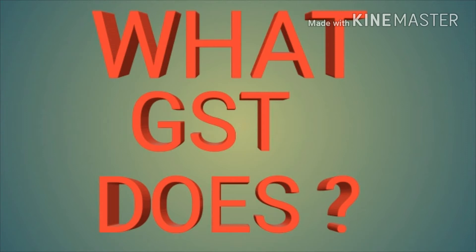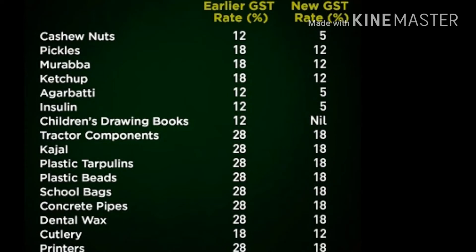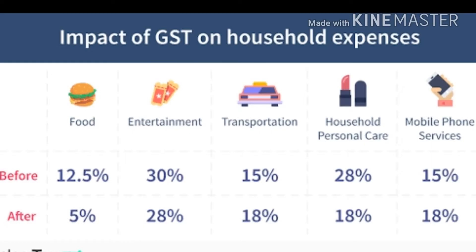Advantages of GST Bill: Multiple taxation is removed, goods and services are taxed at the same rate, and taxes on manufacturers are reduced, making goods cheaper. Under GST, most food items have been exempted from tax or fall in a lower tax category of 5 or 10 percent. Unpacked food grains, unbranded atta, maida, besan, fresh vegetables and fruits, and salt will get cheaper as they are exempted. Many processed food items will fall under 5 percent tax and also get cheaper. Apparel and footwear have been put under different tax slabs ranging from zero to eighteen percent, but most will get cheaper.